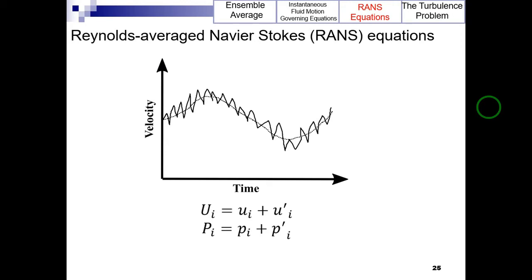Thus this technique for decomposing the instantaneous values of variables is referred to as the Reynolds decomposition. Note that the averages are defined as ensemble mean and thus they are time dependent.